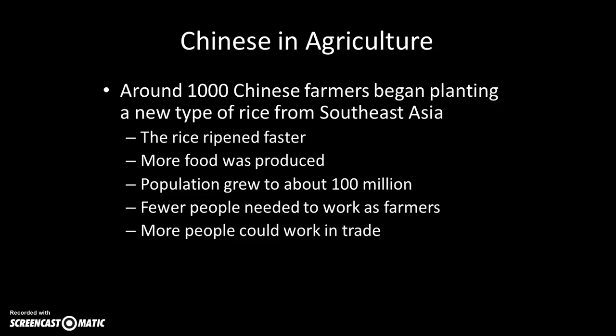Early under the Song Dynasty, around the year 1000, Chinese farmers began planting a new kind of rice imported from Southeast Asia — the area of Vietnam, Laos, Cambodia, and other countries. This rice ripened faster, so they could produce more rice per season and more overall throughout the year. The population of China quickly grew to around a hundred million. With extra food, not everyone needed to farm, so more people could work in a particular trade.